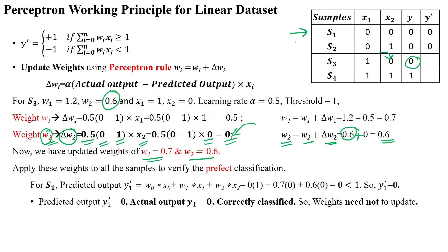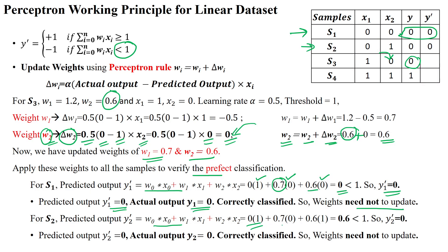With the new weights, for sample number 1: substituting the values gives 0. Since 0 is less than 1, the predicted output is 0 and the actual output is also 0 — correctly classified, no weight update needed. For sample number 2 with the new weights: substituting gives 0.6, which is less than 1, so the predicted output is 0 and the actual output is also 0 — correctly classified, no weight update needed.